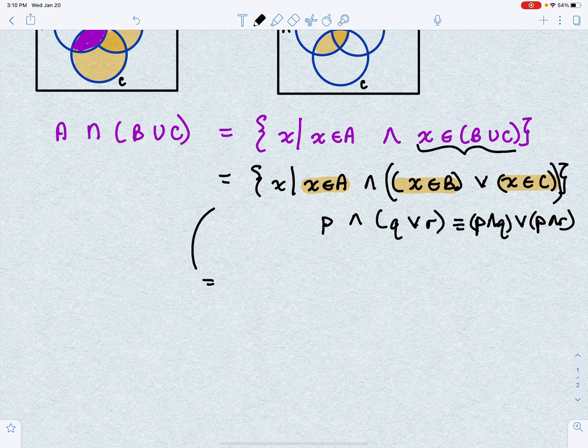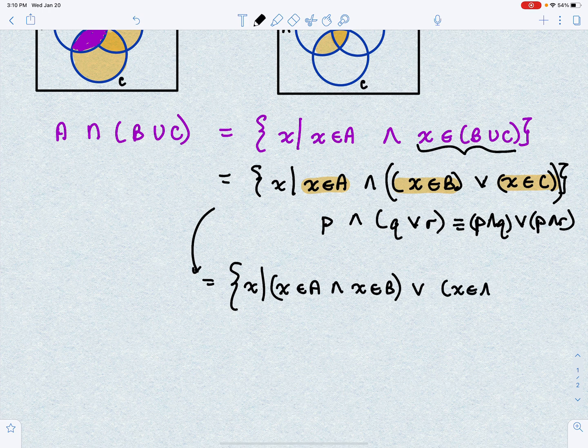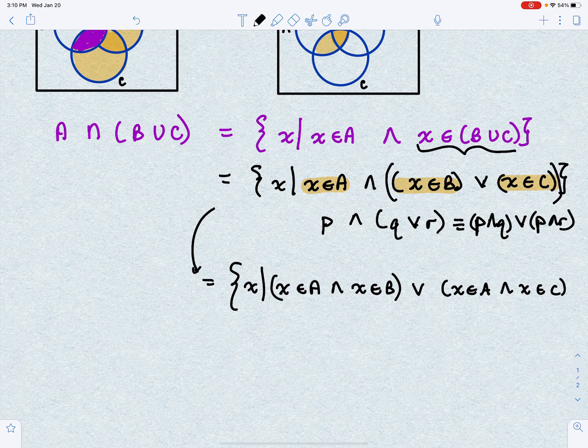So that means that this is the set of all X such that now we distribute the and through. So we have X belongs in A and X belongs in C. So I think this is coming together here.